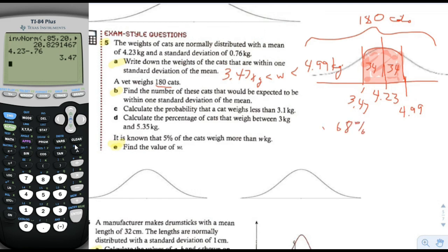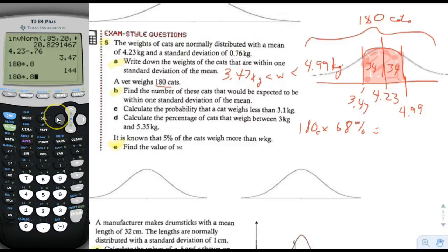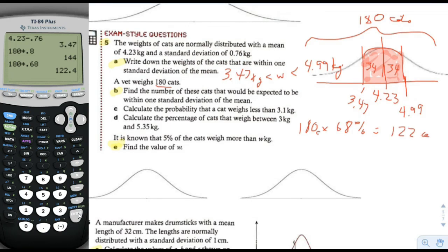If you're going to multiply 180 cats times 68%, you multiply times 0.68, not 68. That gives us 122.4, so let's say 122 cats, because it's hard to have 0.4 cats.